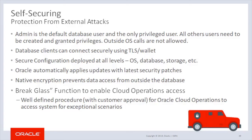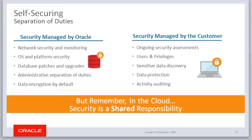Oracle automatically applies updates and the latest security patches on a quarterly or off-cycle basis for high-impact security vulnerabilities. Native encryption prevents data access from outside the database. Oracle tools leveraged by Autonomous Database include Database Vault, which accomplishes: first, no access to the database node or file system — Oracle DBAs are separated from actual data.